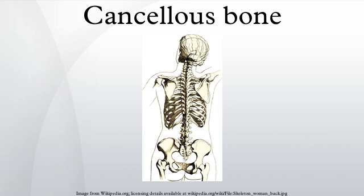Cancellous bone is typically found at the ends of long bones, proximal to joints, and within the interior of vertebrae. Cancellous bone is highly vascular and frequently contains red bone marrow where hematopoiesis, the production of blood cells, occurs. The primary anatomical and functional unit of cancellous bone is the trabecula.